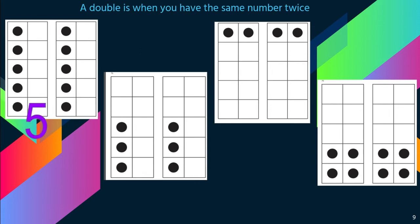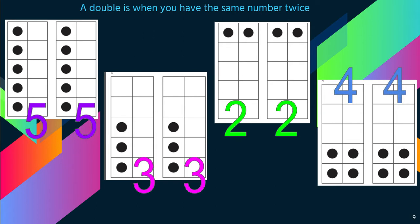So this first one, five and five. So I have two 10 frames and each of them show five. I have these here. One shows three and the other one shows three. Two and two. Four and four. These are all doubles. A double is when you have the same number twice.